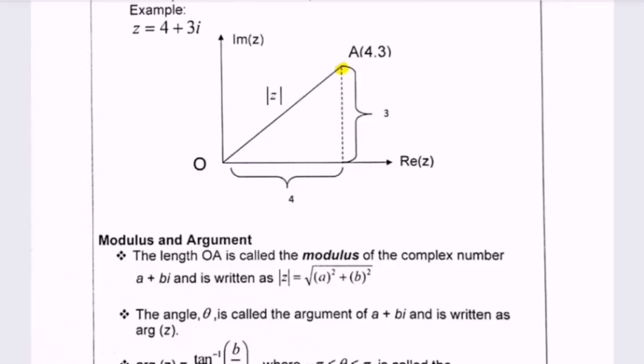Step number 1 is to find the modulus of z, where we have the modulus or the length of OA, which we call the modulus of z, or the complex number z.